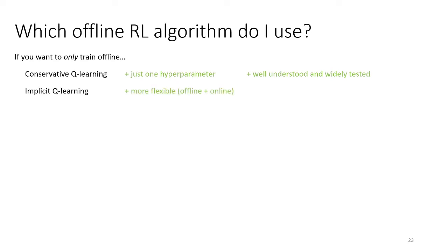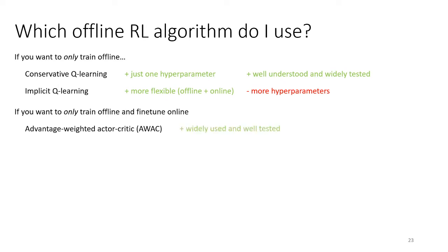Implicit Q-learning is also a good choice. It's a bit more flexible because it also works well for both offline and online, but it has more hyperparameters. If you want to only train offline and then fine-tune online, then advantage-weighted actor critic is a good choice — it's widely used and well tested in exactly this regime. Conservative Q-learning is not a good choice for this because while it works very well offline, it doesn't fine-tune well because it tends to be too conservative. Implicit Q-learning is a good choice for offline training followed by online fine-tuning, and empirically it seems to perform better than advantage-weighted actor critic, although it hasn't been around as long and isn't as widely validated.